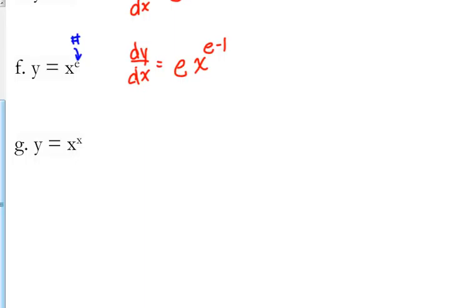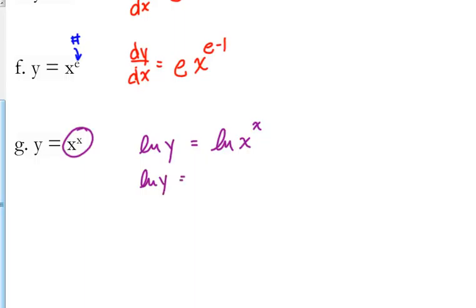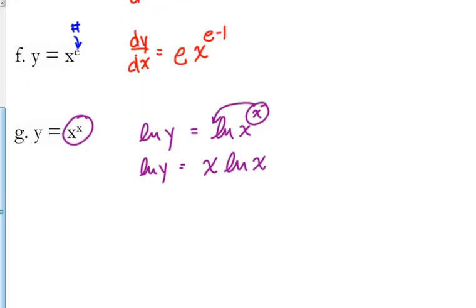What about y equals x to the x? We've actually done this problem before. Your exponent is a variable, so that makes you think you should use the exponential rules. But then your base is also a variable, so that makes you think power rule — but my exponent is a variable, so what do I do? Remember logarithmic differentiation? We do not have a rule for a variable raised to another variable, so we need to use logs to rewrite this.